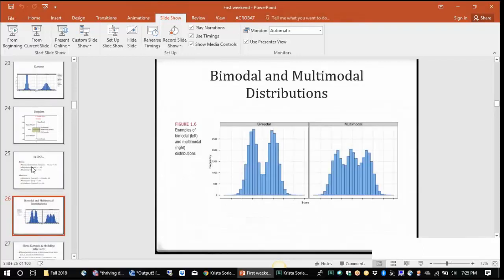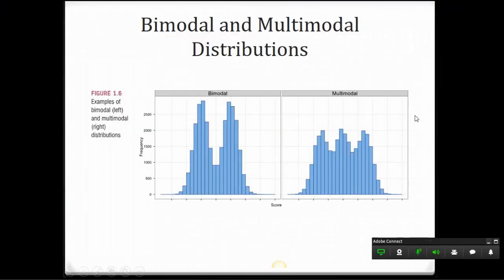We also might encounter occasionally bimodal or multimodal distributions. Even though it looks like two normal distributions or three right in a row, these are non-normal distributions.